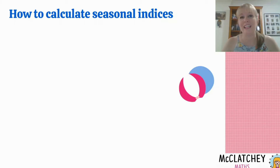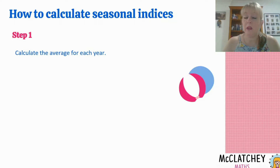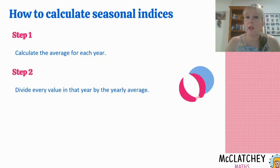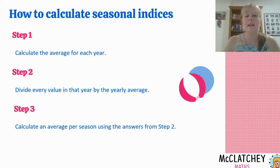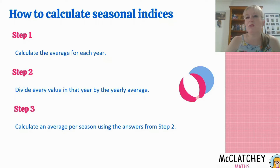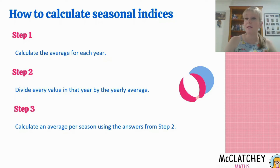So let's talk about how to calculate those seasonal indices. Step one: calculate the average for the whole year. Step two: divide every value that year by that yearly average. Step three: calculate an average per season using a number of years of data, taking our answers from step two. These are going to be the same three steps any time you calculate seasonal indices. You may want to pause now and take some notes.